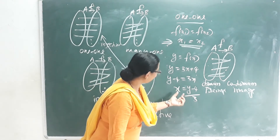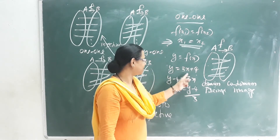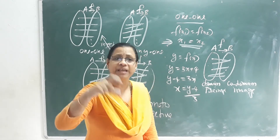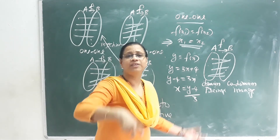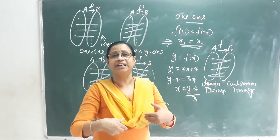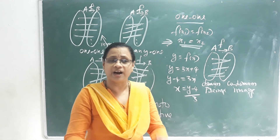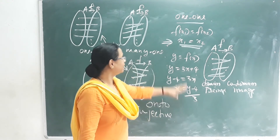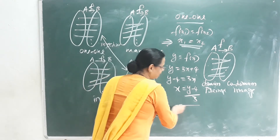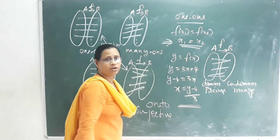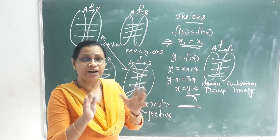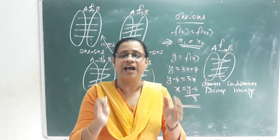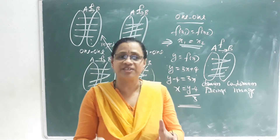When a function is both one-one (injective) and onto (surjective), we call it a Bijective function.